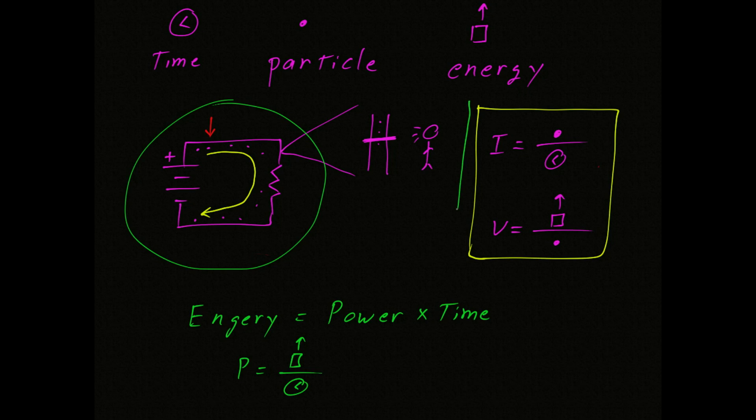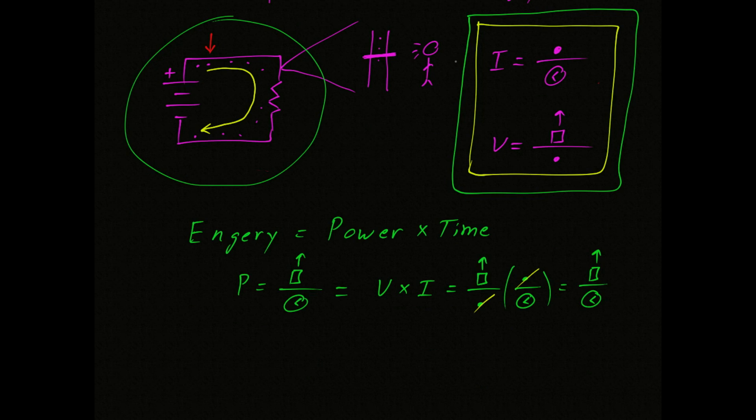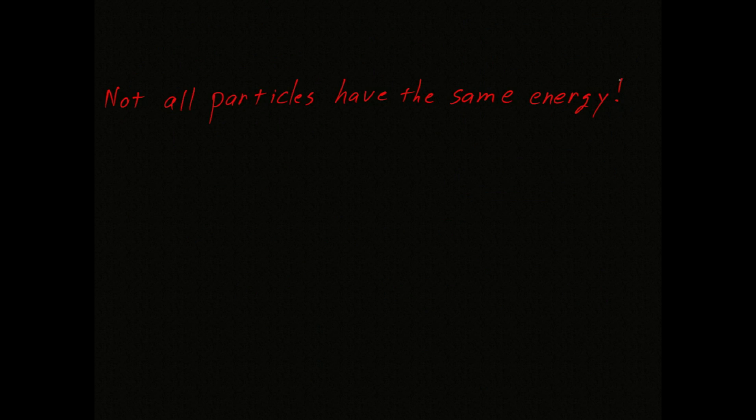If you look at our equations for voltage and current, I think you can find a way to shuffle them around. So you might say power is equal to the product of voltage and current. Or using our symbology, if you remember nothing else from this video, remember this statement.